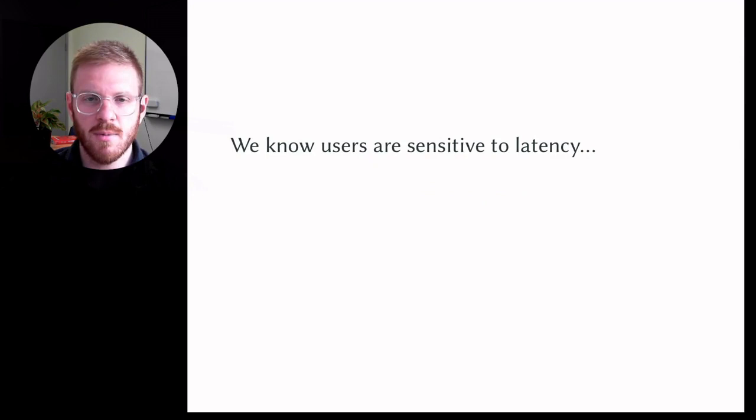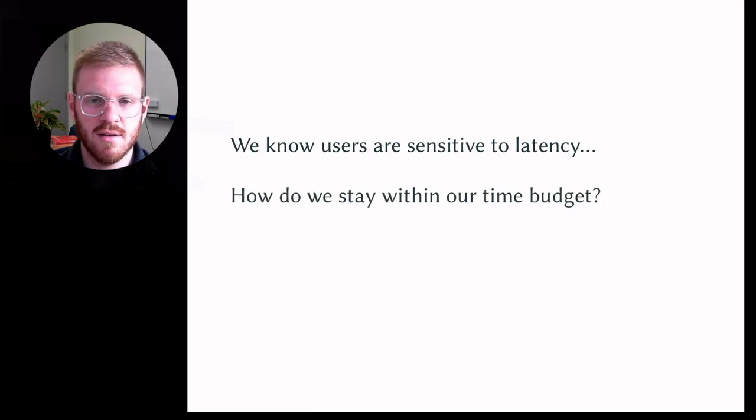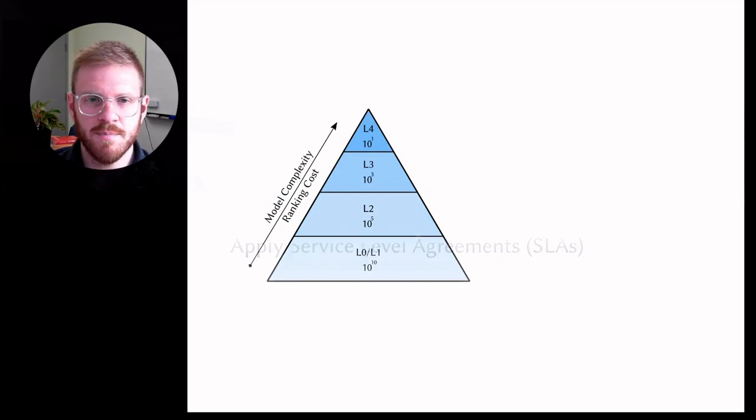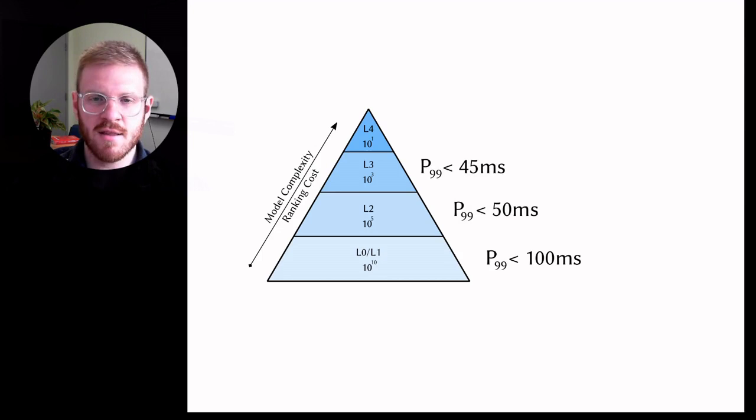So we know that end users, the users who use our search engines, they're very sensitive to latency. How do we stay within our time budget? What we can do is we can apply service level agreements or SLAs. Each stage of the search system will have some specified latency which must be met. Here we're saying that we need a P99 of less than 100 milliseconds for the L0 or L1 candidate generation stage. What that means is that only one in 100 queries can exceed 100 milliseconds. If we specify these SLAs at every stage, we essentially can keep a lid on the overall worst case scenario latency of our search engine.